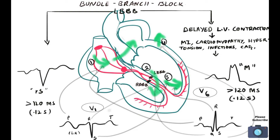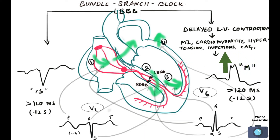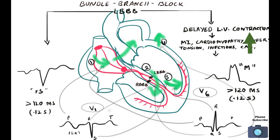The common causes of left bundle branch block include myocardial infarction, cardiomyopathy, hypertension, infection, and coronary artery diseases, where the conductivity in the left ventricle becomes delayed. This is all about bundle branch block, their identification, and clinical manifestations.